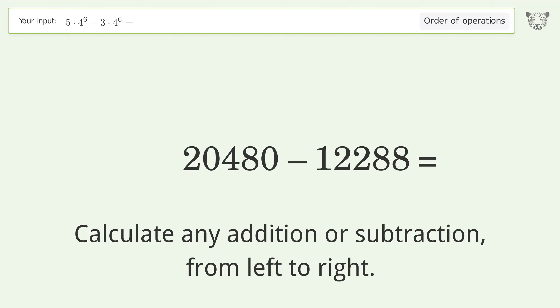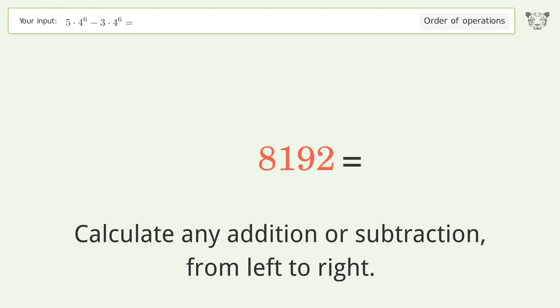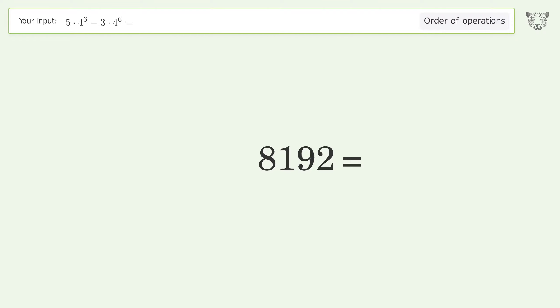20480 minus 12288 equals 8192. And so the final result is 8192.